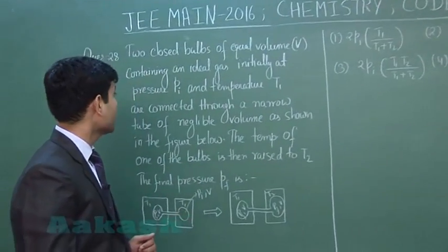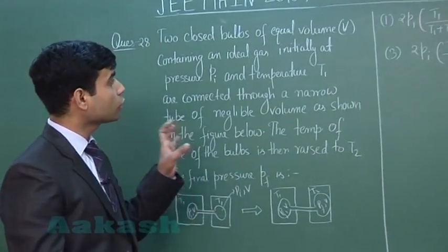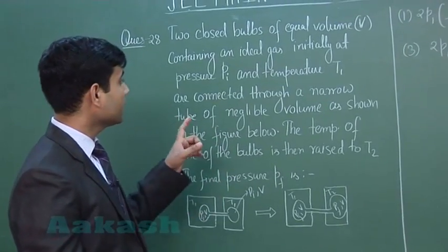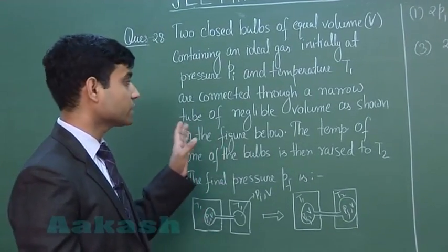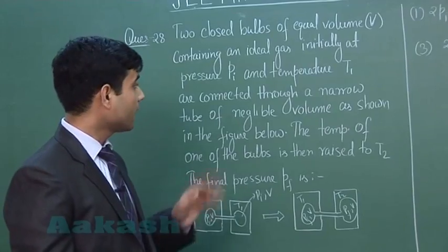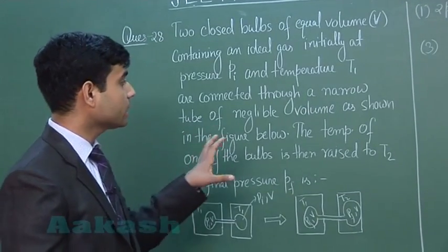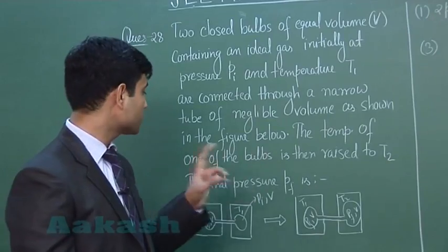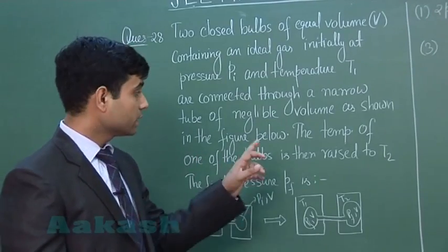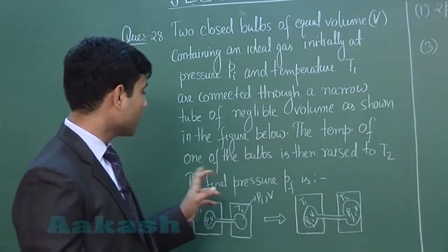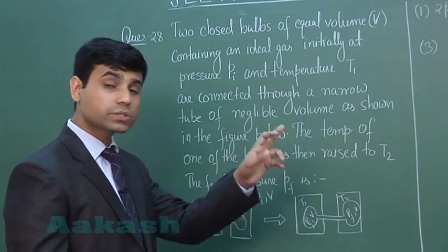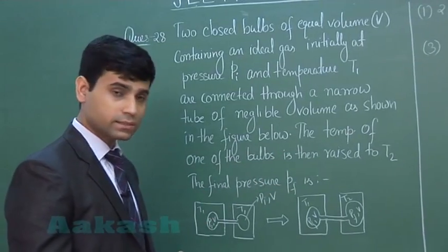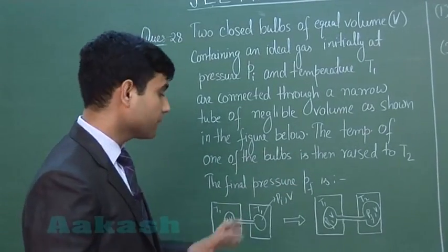This is the next question. We have two closed bulbs of equal volume V containing an ideal gas initially at pressure PI and temperature T1, connected through a narrow tube of negligible volume as shown in the figure below. The temperature of one of the bulbs is then raised to T2. The final pressure PF is shown in the figure.